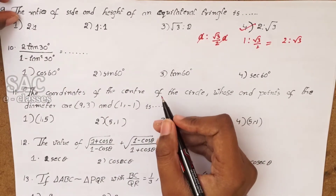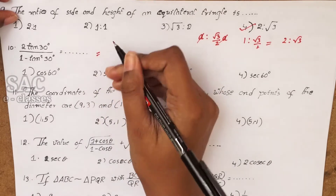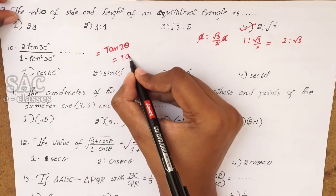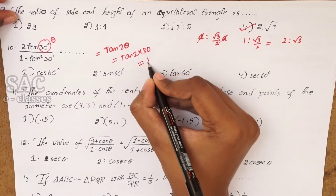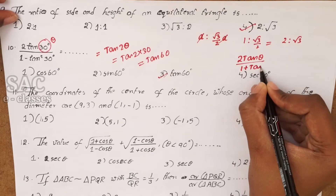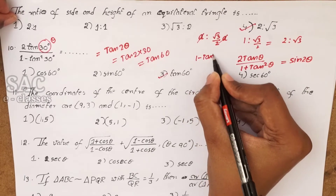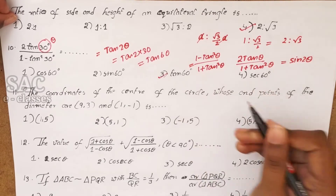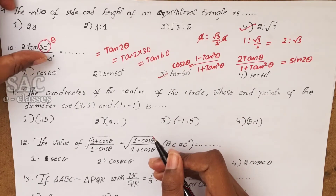Problem number 10: 2tan30°/(1 − tan²30°). As discussed in a previous video, the formula 2tanθ/(1 − tan²θ) = tan2θ. Taking θ = 30°, we get tan(2×30°) = tan60°. Note: 2tanθ/(1 + tan²θ) = sin2θ, and (1 − tan²θ)/(1 + tan²θ) = cos2θ, so 2tanθ/(1 − tan²θ) = tan2θ.